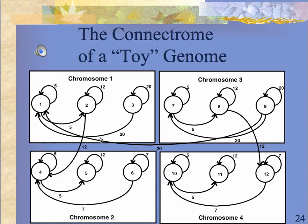What I'd like to argue is that you could consider these 12 transcription sites to be a toy connectron, because the behavior of this set of transcription sites — all of them being one-shots in this case — is controlled by the interaction of the sets of sites with each other. This is what connectrons do. We only have 12, so this is a toy genome.